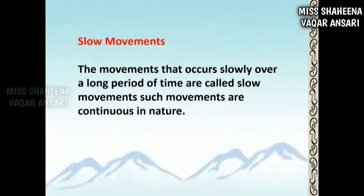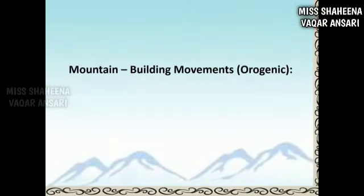Slow movements are changes that bring about changes in the earth's crust gradually, taking hundreds, thousands, and millions of years — covering a period much longer than a human lifespan. These movements act on the earth's crust either vertically or horizontally.